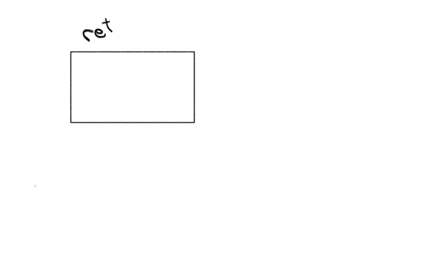In this problem, we have four layers of material. First, we have refractory brick — I'll call that refractory brick — and that's going to have a thermal conductivity which I'll call kr, and a corresponding length which I'll call lr, where the subscript r is an abbreviation for refractory.